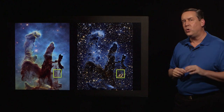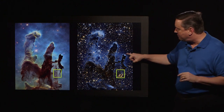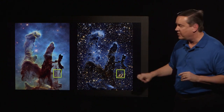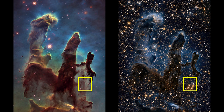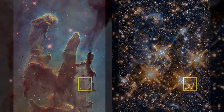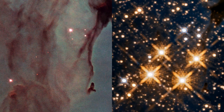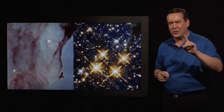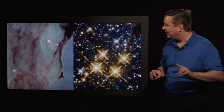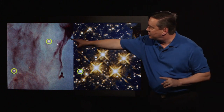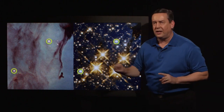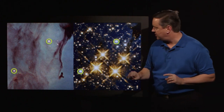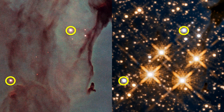There's one other cool region I want to talk about, and it's actually at the bottom of the smallest pillar. You can see that those two stars there in the visible light image appear here in the infrared image.